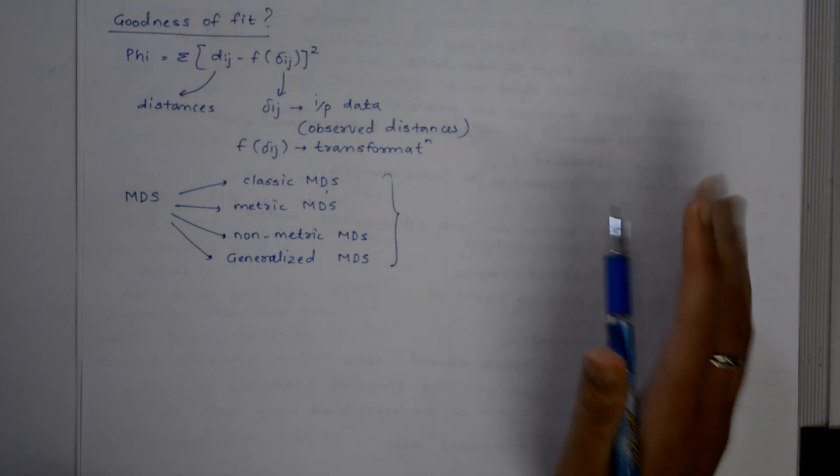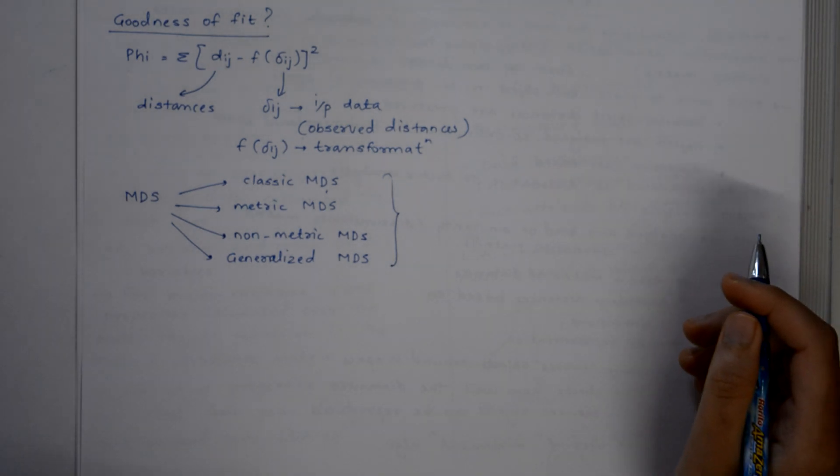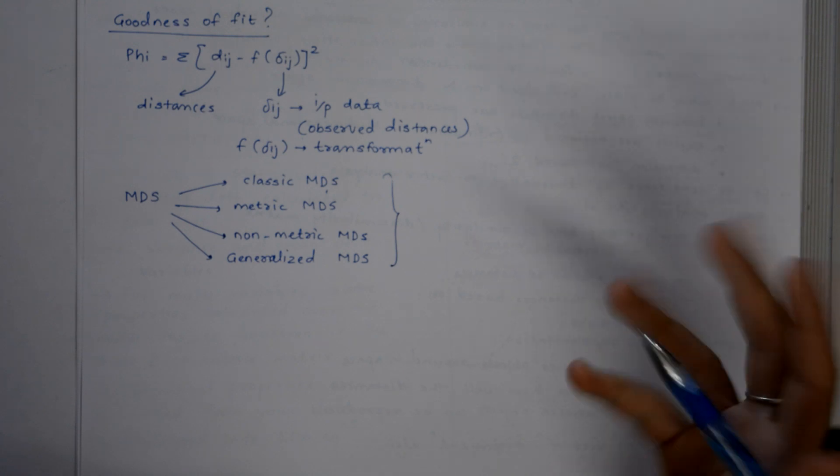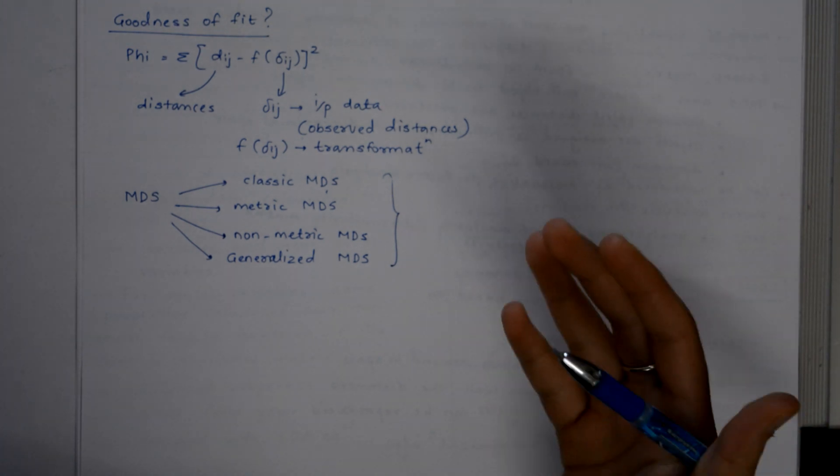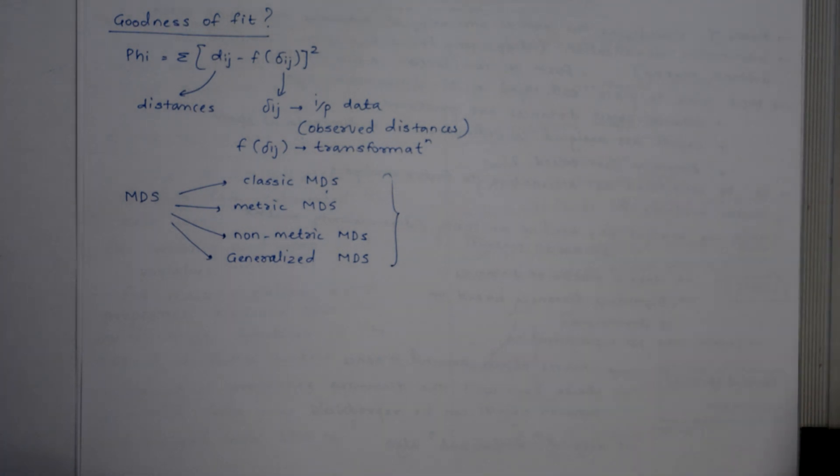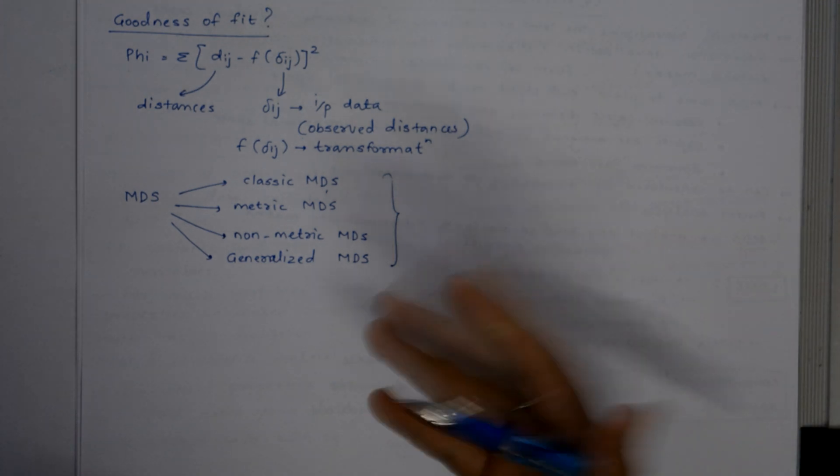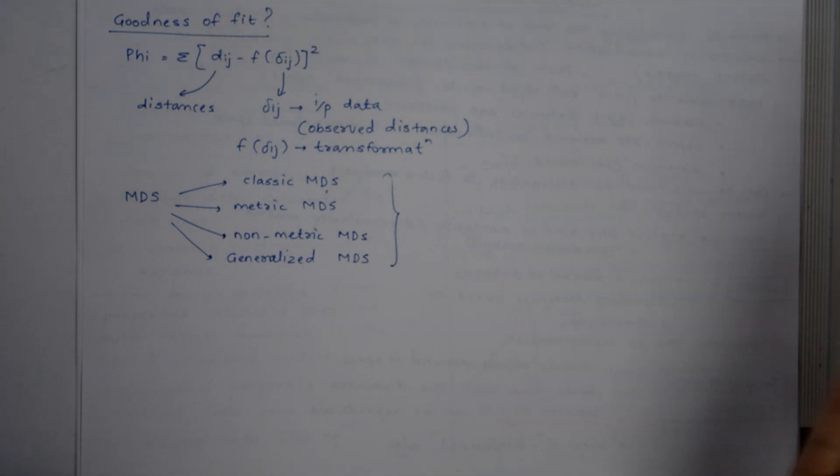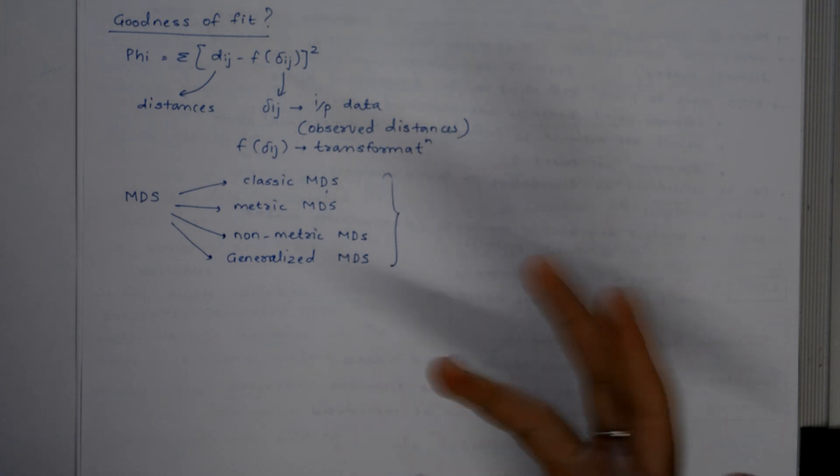These similarities can represent people's ratings of similarities between objects, the percent agreement between judges, the number of times a subject fails to discriminate between stimuli, etc.